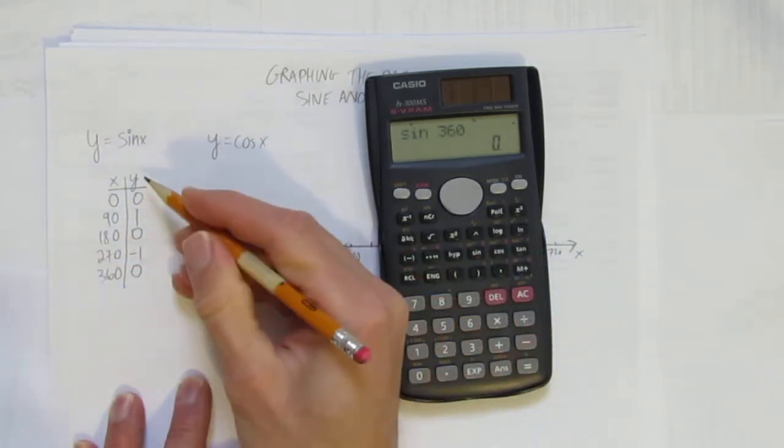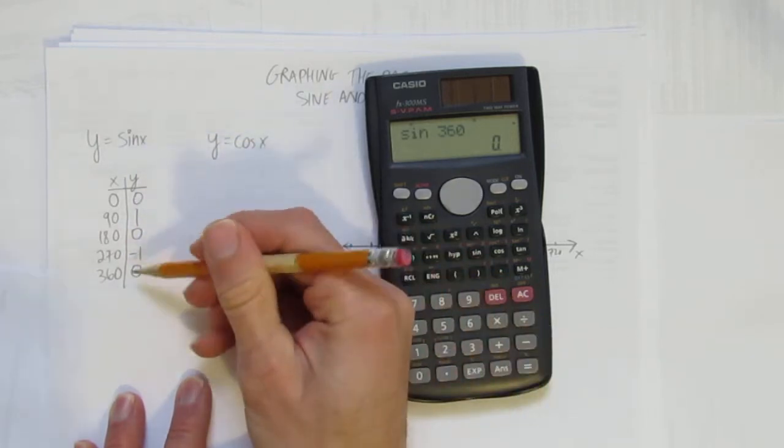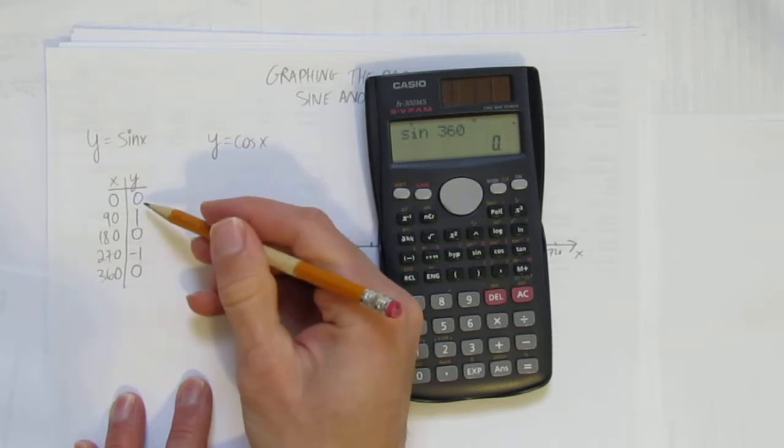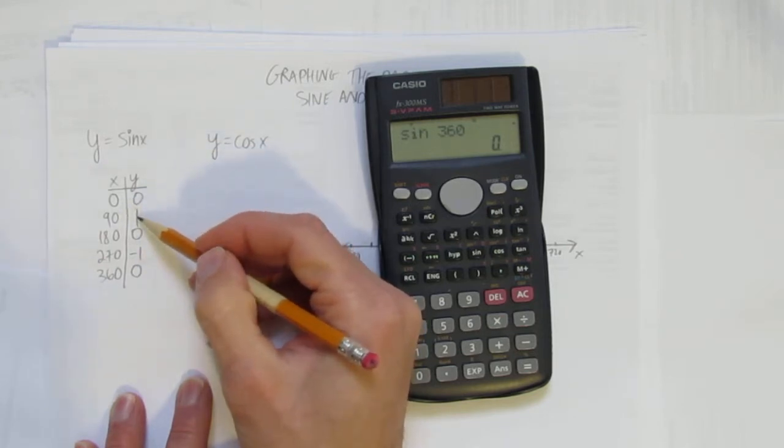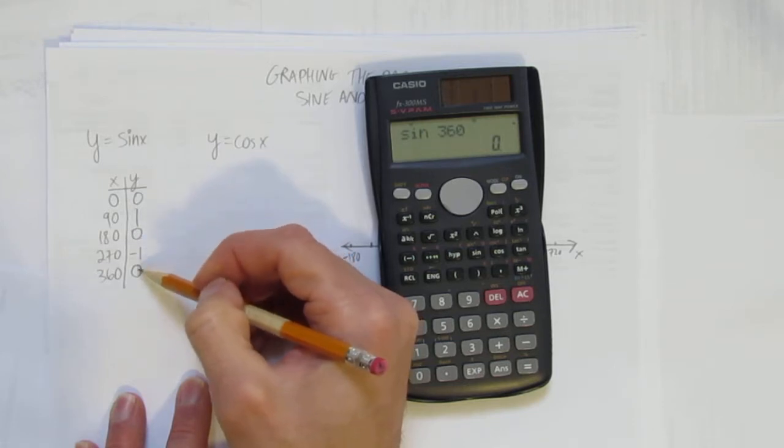That is the sine parent function table. I know it off by heart because I've done it so many times. Eventually, you'll get used to this. Sine starts at 0, goes up to 1, goes down to 0, goes to negative 1, and back to 0.